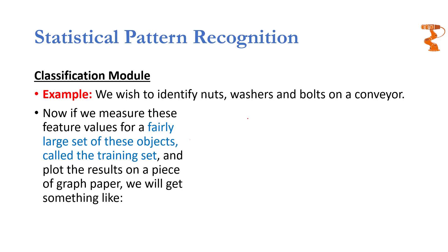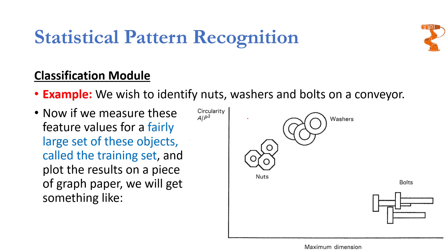The first step of the classification module is to formulate a feature space and perform training if we are performing supervised learning. For training our system, we will require a large number of objects of each type and ask the feature extraction module to extract the decided features from all objects and place them based on their feature values in the feature space. Nuts, having the smallest maximum dimension and slightly less circularity than washers, will be placed in one region; washers, having highest circularity and mediocre maximum dimension, in another; and bolts, with lowest circularity but highest maximum dimension, in a third region.